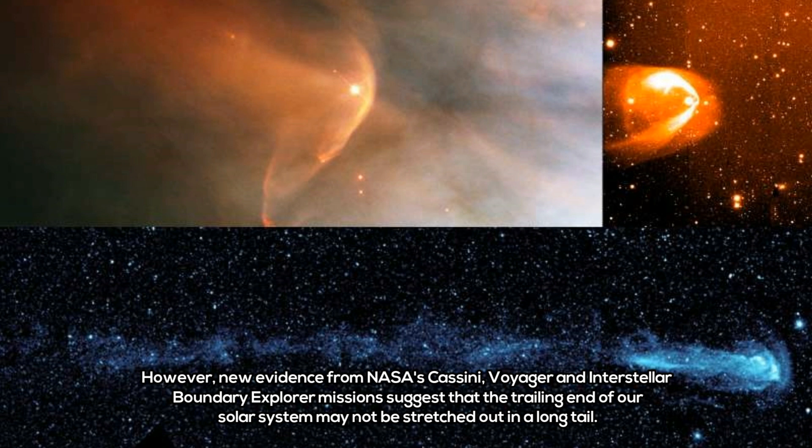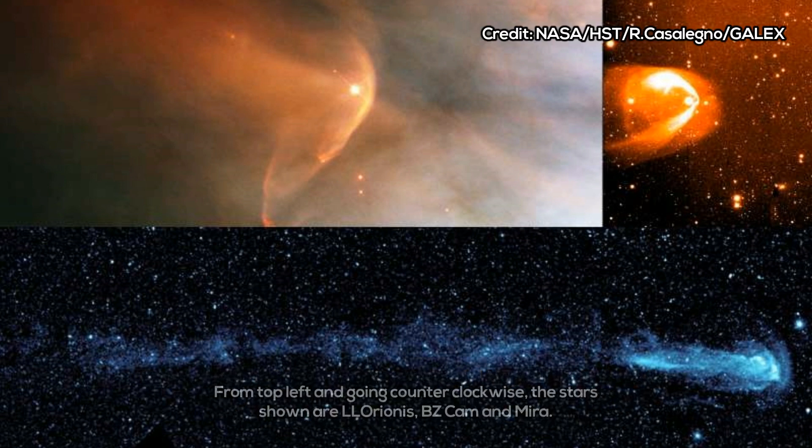An instrument on Cassini, which has been exploring the Saturn system over a decade, has given scientists crucial new clues about the shape of the heliosphere's trailing end, often called the heliotail.